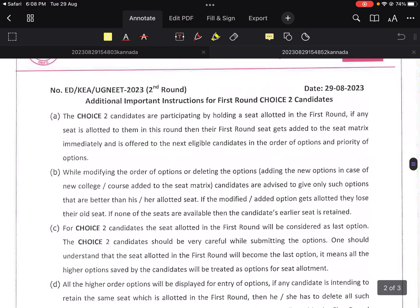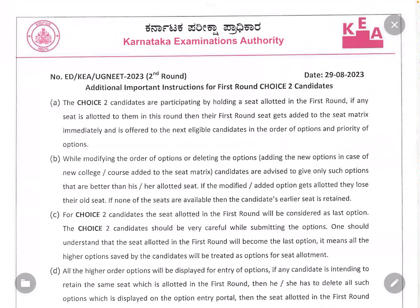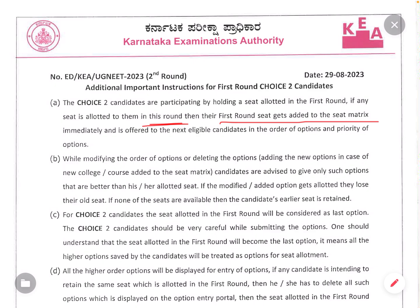Next, additional important instructions for first round Choice 2 candidates. Choice 2 candidates are participating in the second round by holding the seat allotted in the first round. If any seat is allotted to them in this round, the first round seat gets added to the seat matrix immediately and is offered to the next eligible candidates in the order of options and priority.